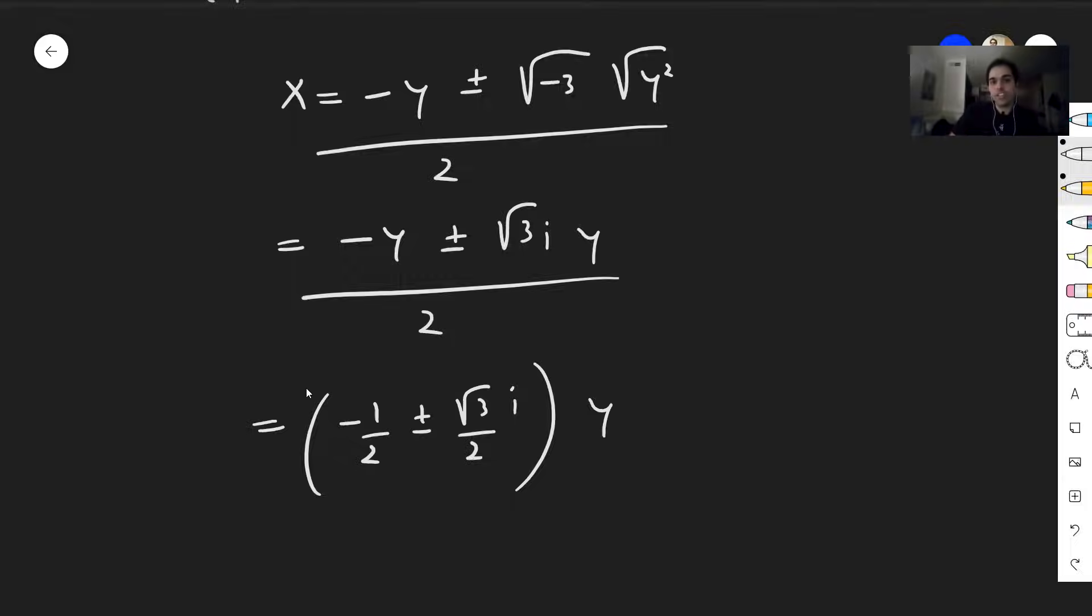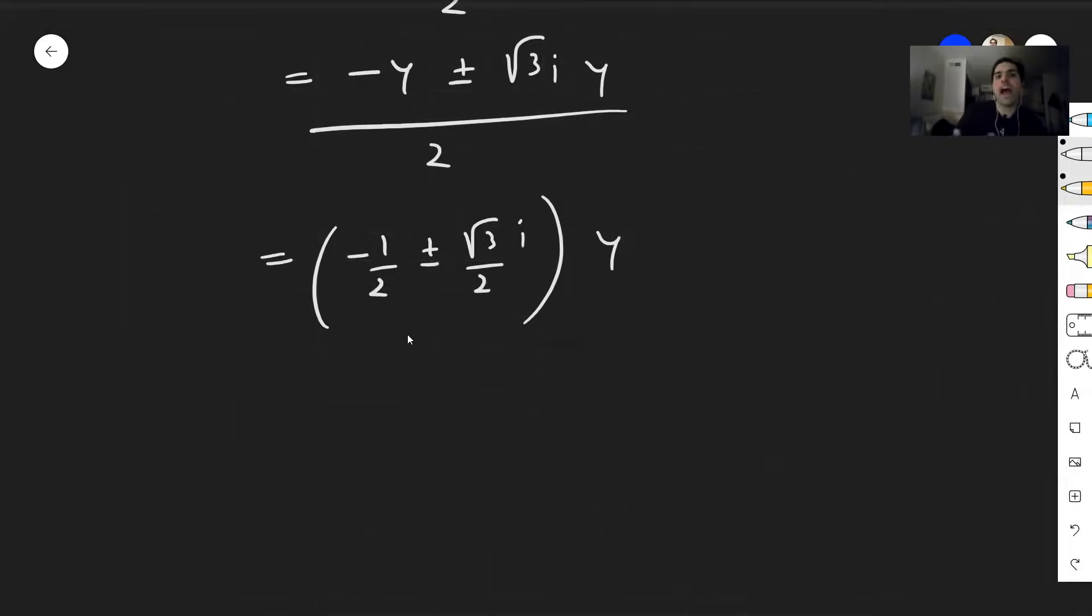And this actually is quite interesting, because what is that? So minus 1 half plus or minus square root of 3i over 2. Well remember cosine of 2 pi over 3 plus i sine of 2 pi over 3, that's precisely minus 1 half plus i square root of 3 over 2. So what this becomes, it's simply e to the 2 pi over 3, but to get this minus, you just do plus minus times y.